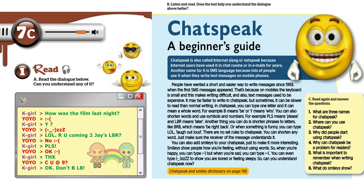In normal chat speak writing, you can type one letter and it can mean a whole word. For example, 'b' means 'be' or 'y' means 'why'. You can also shorten words and use symbols and numbers. For example, 'pls' means 'please' and 'l8r' means 'later'.